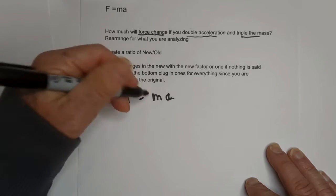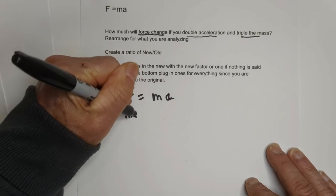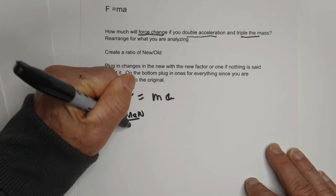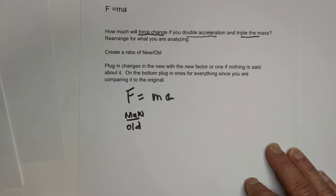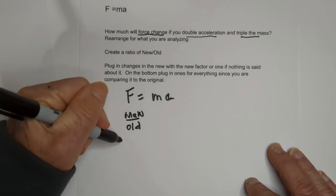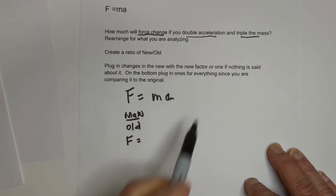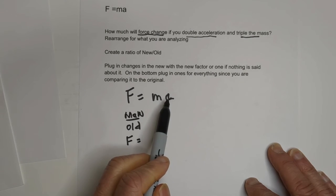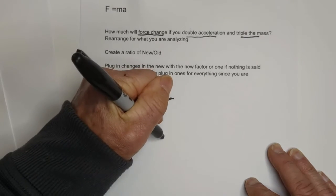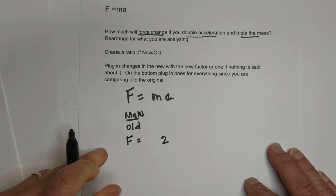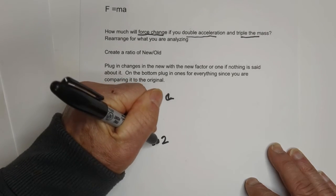Remember, we're going to create a ratio of new over old. Let's try this. We want to know what happens to force when acceleration is doubled and we triple the mass.